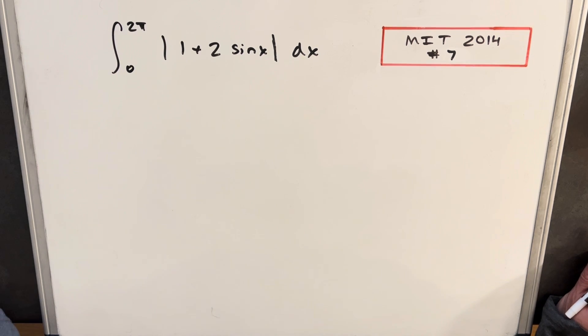Hey, we have another integral here today from MIT 2014, Problem 7. This is the integral from 0 to 2π of the absolute value 1 plus 2 sine x dx.